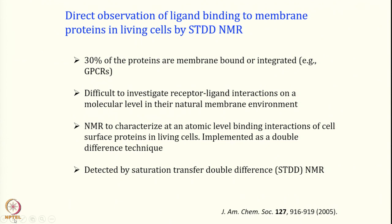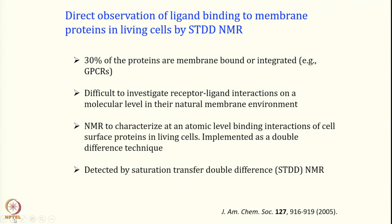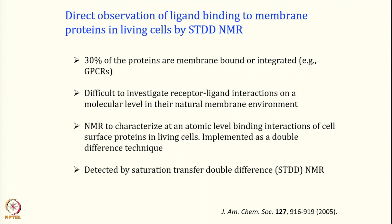STD NMR: we are saturating the signal exclusively from the protein. If the small molecule ligand is binding, the effect of that saturation will be transferred to the ligand. When we take a difference spectrum — when it is not saturated versus saturated on the protein — the epitopes that bind to the protein will be illuminated. That is STD NMR, saturation transfer difference. Now we are going to discuss saturation transfer double difference.